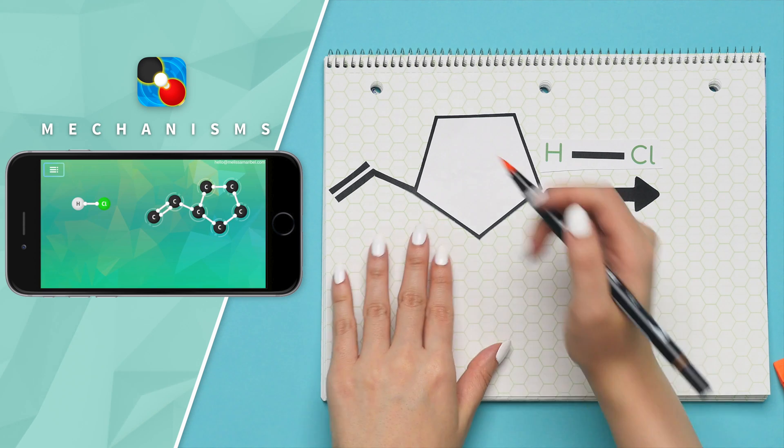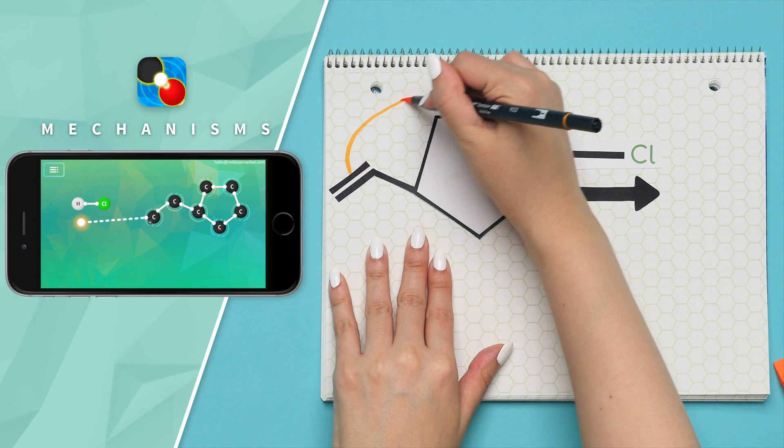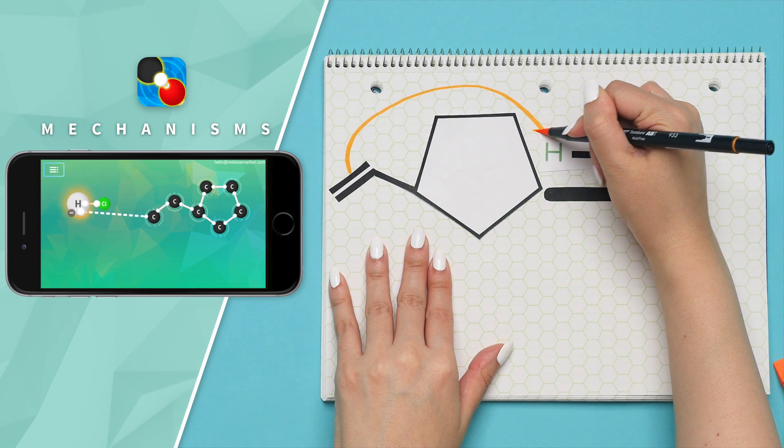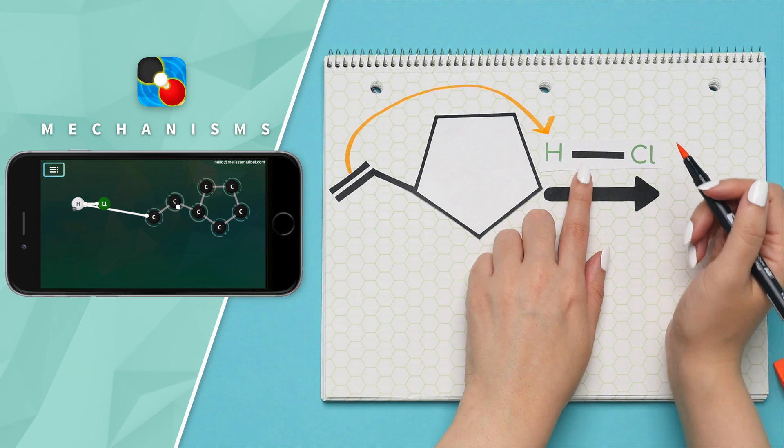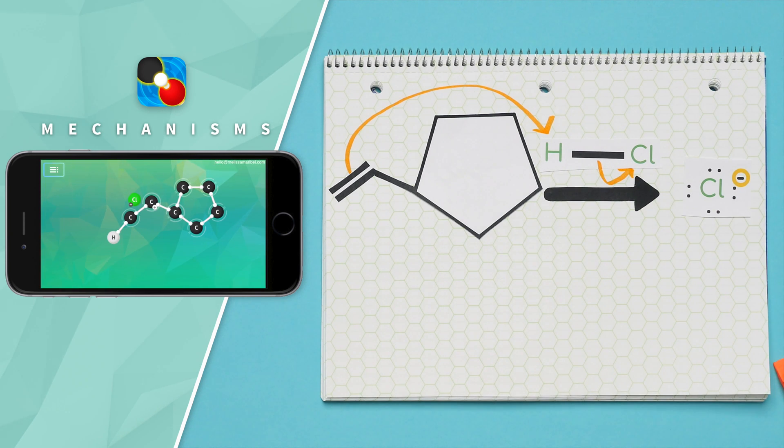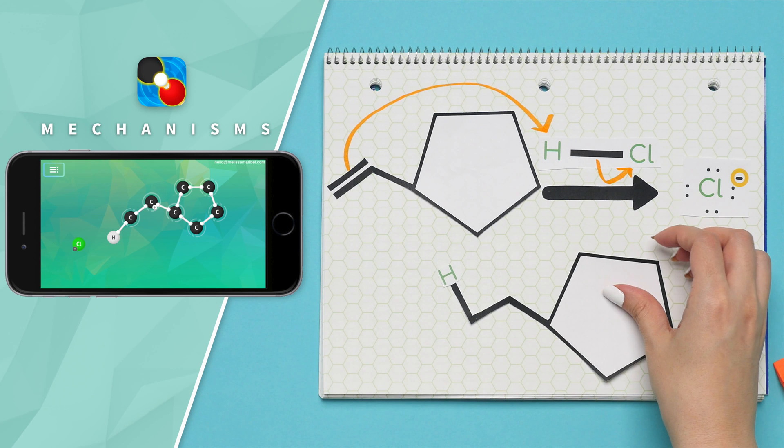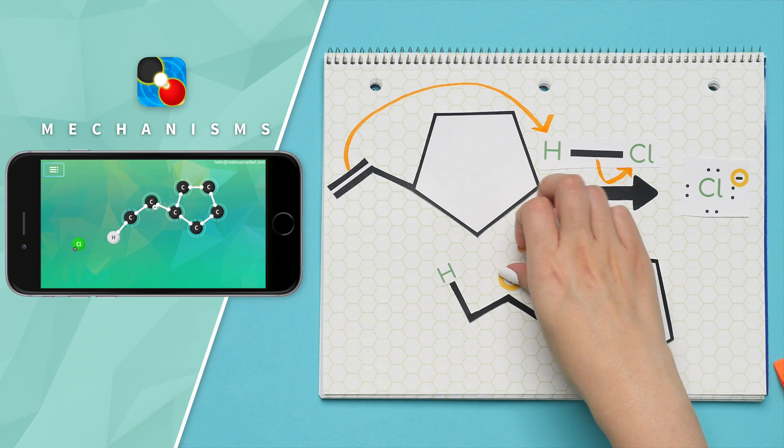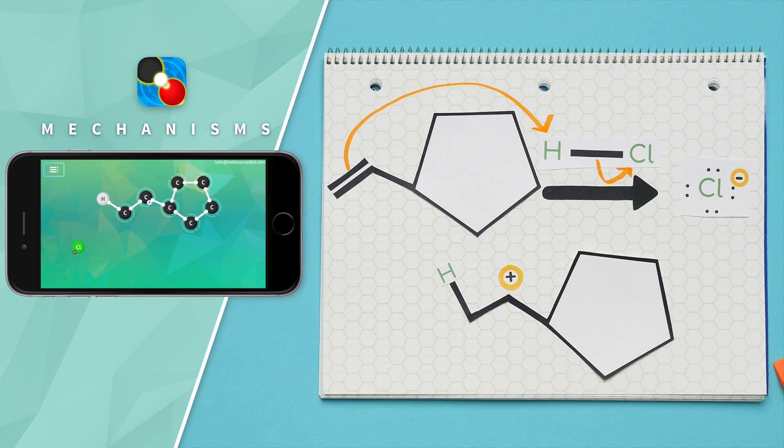Our first step is protonation. This is where the electrons in the double bond reach out and grab the hydrogen. Electrons from this bond now go to the chlorine, and our chlorine is now negatively charged since it gained electrons. Now we get a secondary carbocation, but we always want to make sure we have the most stable carbocation possible.